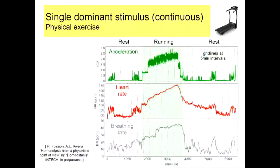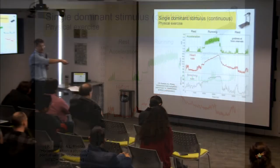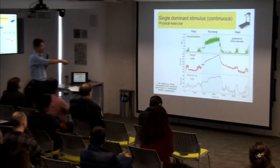Let me go to the first part: what happens with the human body when we have a single dominant stimulus? For example, let's say you're running on a treadmill. We have three simultaneous time series measured with a belt you put on the chest, which collects simultaneously acceleration, heart rate, breathing dynamics, etc.